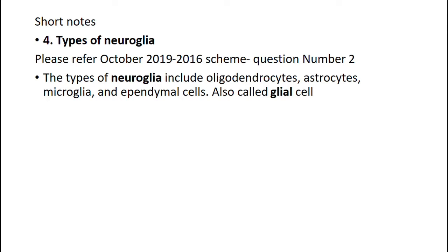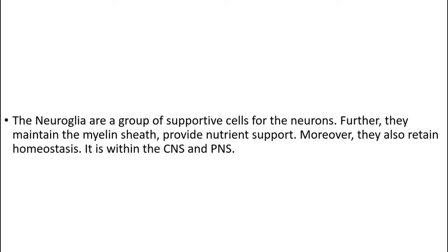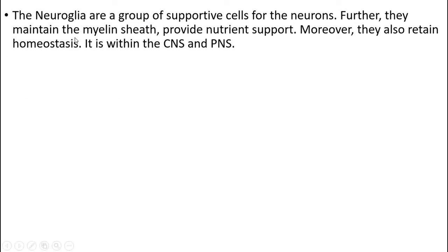Then: types of neuroglia. This is referenced from 2019-2016 scheme where it has been asked. The types of neuroglia include oligodendrocytes, astrocytes, microglia, and ependymal cells, which are also called glial cells. We will see each one by one.